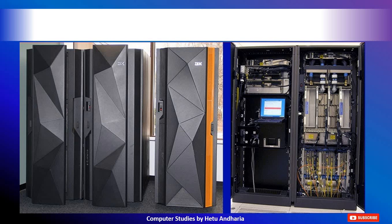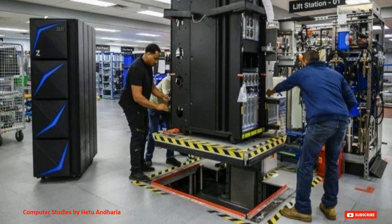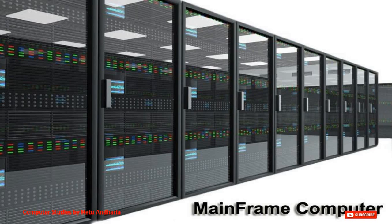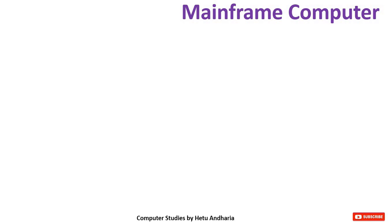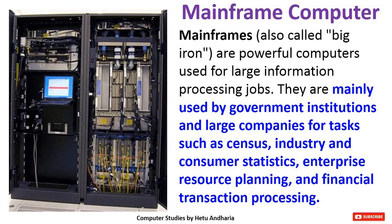Here you can see the image of another type of computer known as a mainframe computer. This is also very big in size — not as big as a supercomputer, but bigger than a personal computer. Mainframes, also called big iron, are powerful computers used for large information processing jobs. They are mainly used by government institutions and large companies for tasks such as census, industry and consumer statistics, enterprise resource planning, and financial transaction processing.